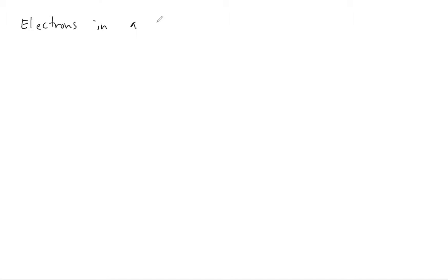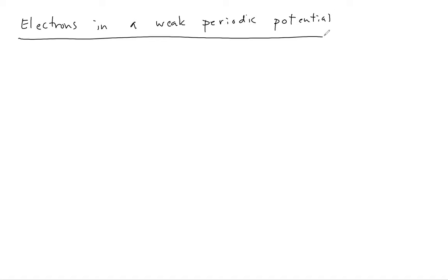Welcome back everyone. Let's continue our discussion of electrons in a weak periodic potential. In the last mini-lecture, we computed the energy shift of a free electron level in the presence of weak coupling to the lattice in the case where there was no degeneracy between the unperturbed levels, and we found that the shift was small — second order in the potential.